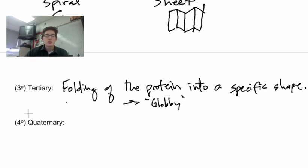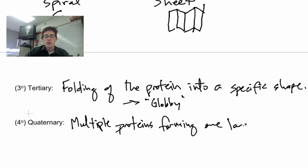The tertiary structure is the folding of the protein and then quaternary structure or fourth degree is when multiple proteins are forming one large structure.